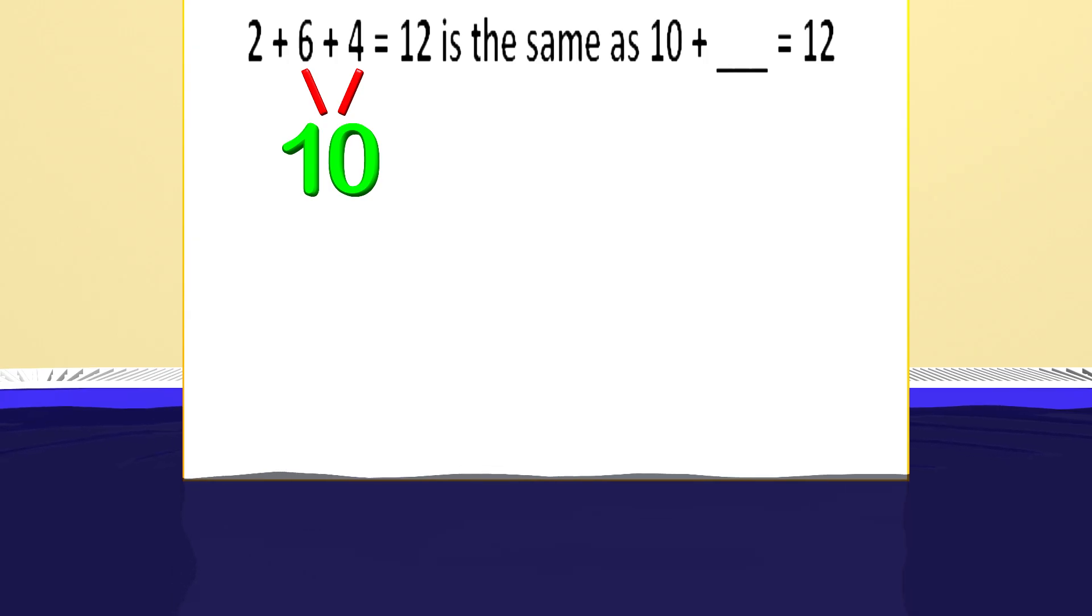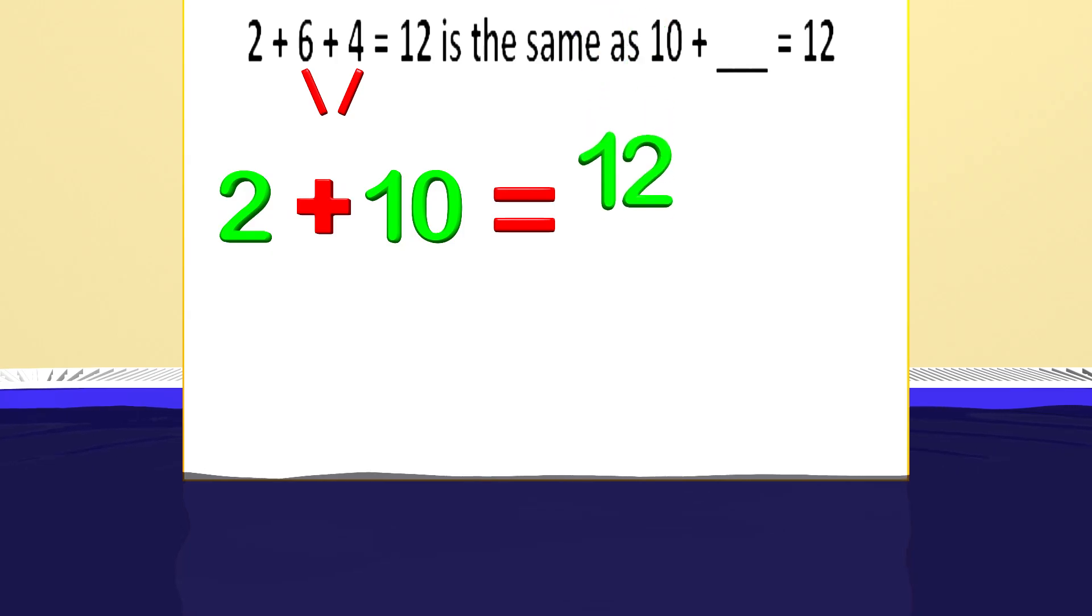Many of you already know partners of 10, like 6 and 4, 5 and 5, 3 and 7, and so on. Now we just have to add 2 plus 10, which is 12. It saves us time to combine numbers that make 10 and then add the other numbers. So the blank in this problem should be filled with what number? The answer is 2. 10 plus 2 equals 12. Great job again!